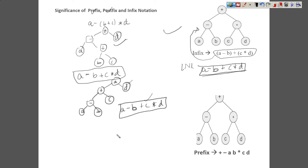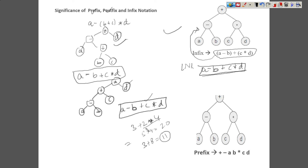What BODMAS means: for example, if you want to solve 3 plus 2 into 4, if you go just blindly left to right, then 3 plus 2 is 5, and 5 into 4 is 20. But actually the answer must be: first we multiply, so 3 plus 8 equals 11. This must be our answer because it follows the BODMAS rule. It takes care of the precedence of the operators and also maintains the associativity among the operators. So let us see how to build a tree that maintains precedence and associativity among the operators.